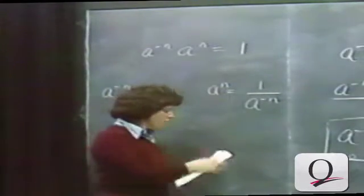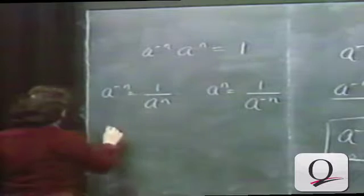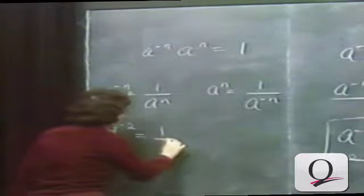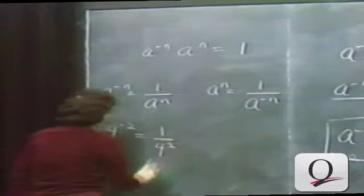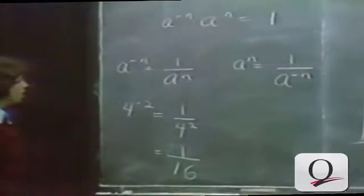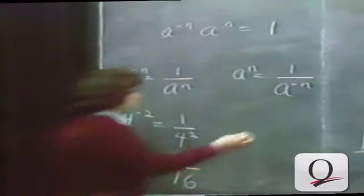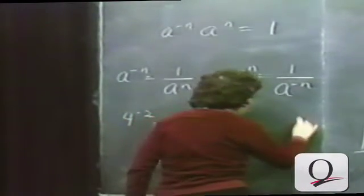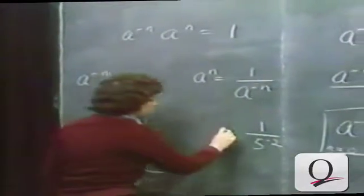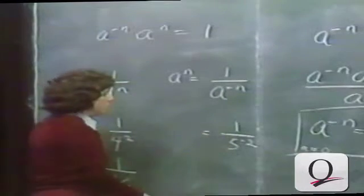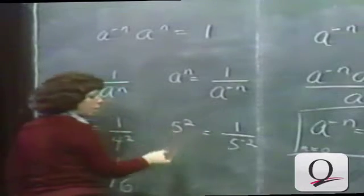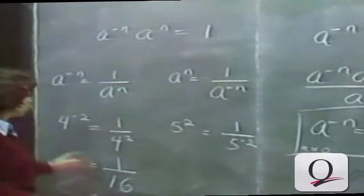For example, if we have 4 to the minus 2 power in an expression, we can rewrite this as 1 over 4 to the second power, which is 1 over 4 times 4, or 1 over 16. On the other hand, if we have 1 over 5 to the minus 2 power in an expression, we can make use of the fact that 1 over 5 to the minus 2 is the same as 5 to the second power, or 25. So the rules can be used in either direction.